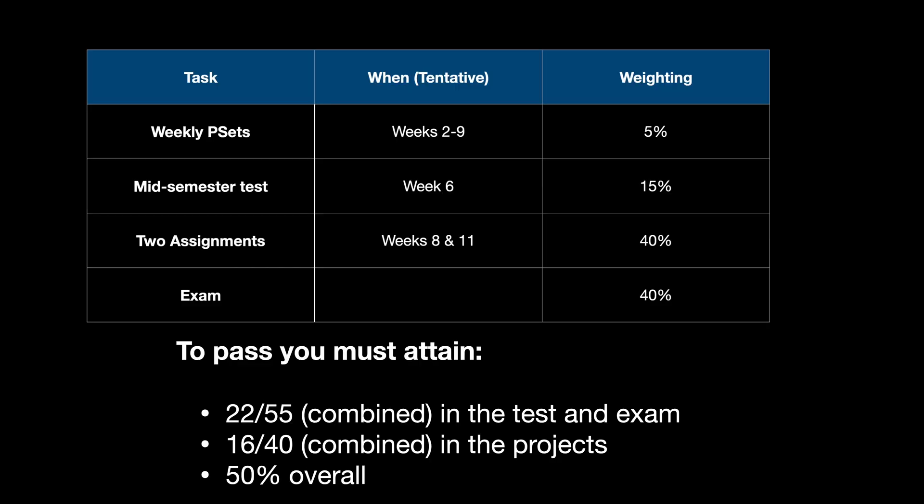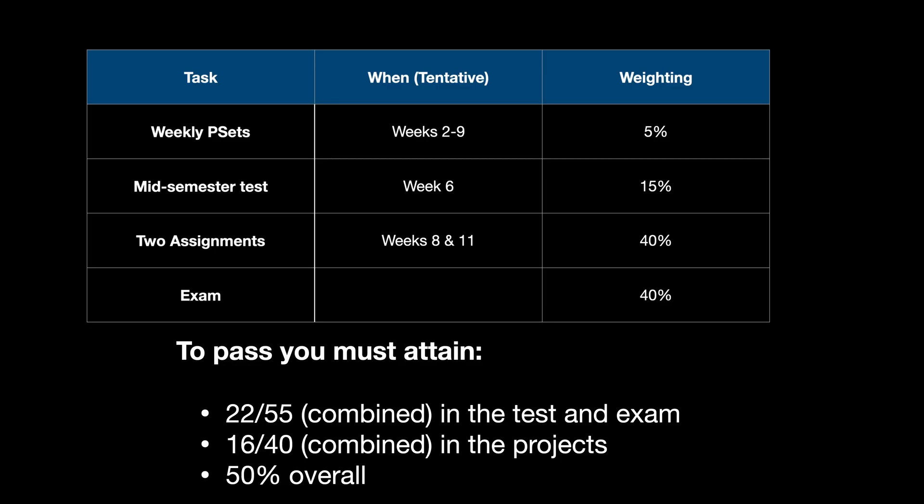These weekly problem sets are worth five percent of your total grade. The next part of your assessment is a mid-semester test that will happen in week six, worth 15 percent of your final grade, held in person in Wilson Hall. This year we are moving back to in-person exams, partially around concerns of academic honesty because of online AI code generation tools. The capstone of your work this semester will be two programming assignments in weeks eight and eleven, combined worth 40 percent of your grade. And then to wrap it all up there is a final exam, worth 40 percent, which will again be pen and paper in person.